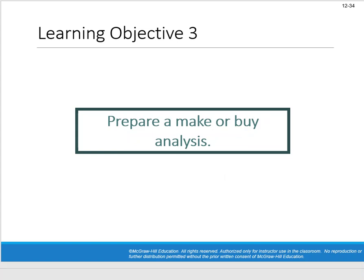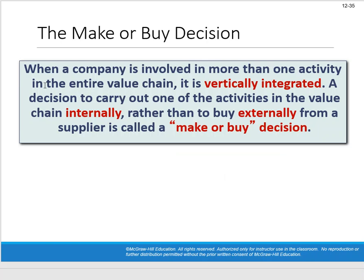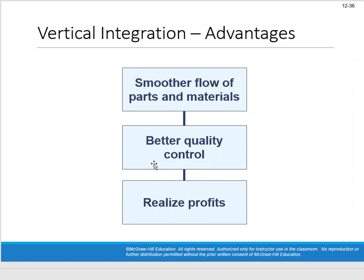Next: make or buy decisions. When a company is involved in more than one activity in the value chain, it's vertically integrated. A decision to carry out an activity internally rather than buy from an external supplier is a make or buy decision. Vertical integration advantages include a smoother flow of parts, better quality control, and potentially more profits — but only if we do a good job. If we don't, those advantages disappear.